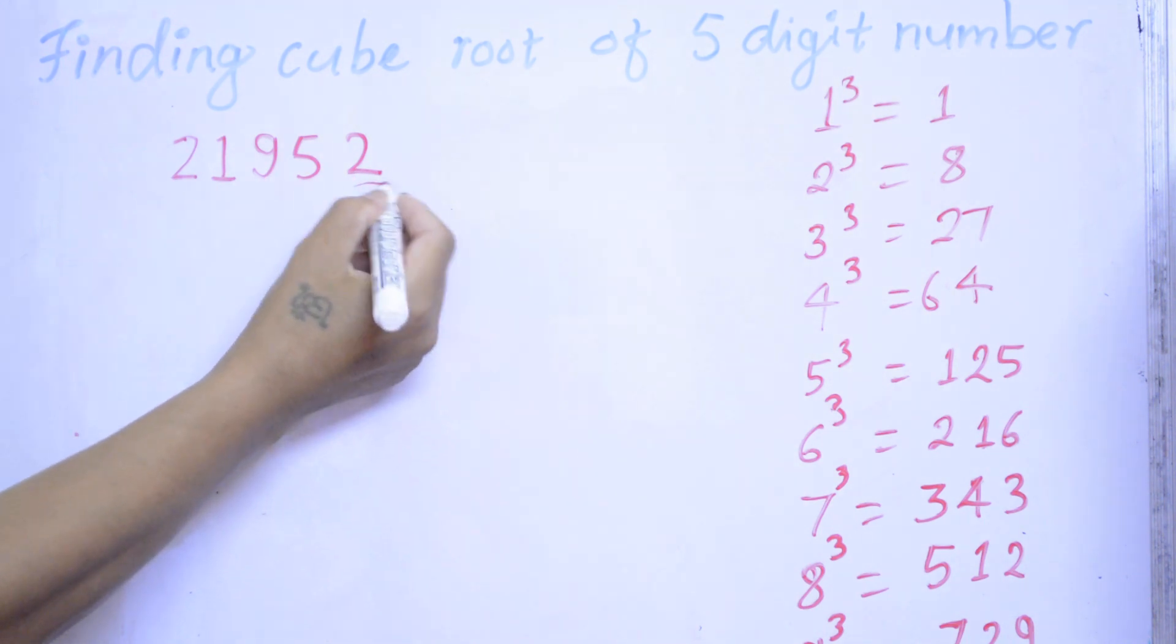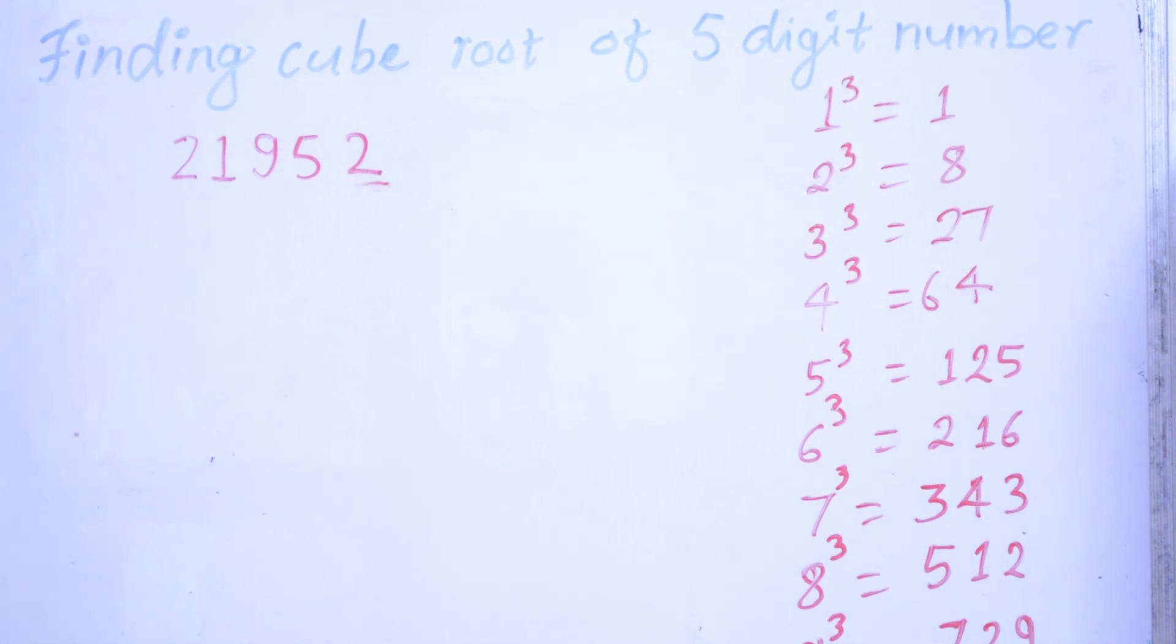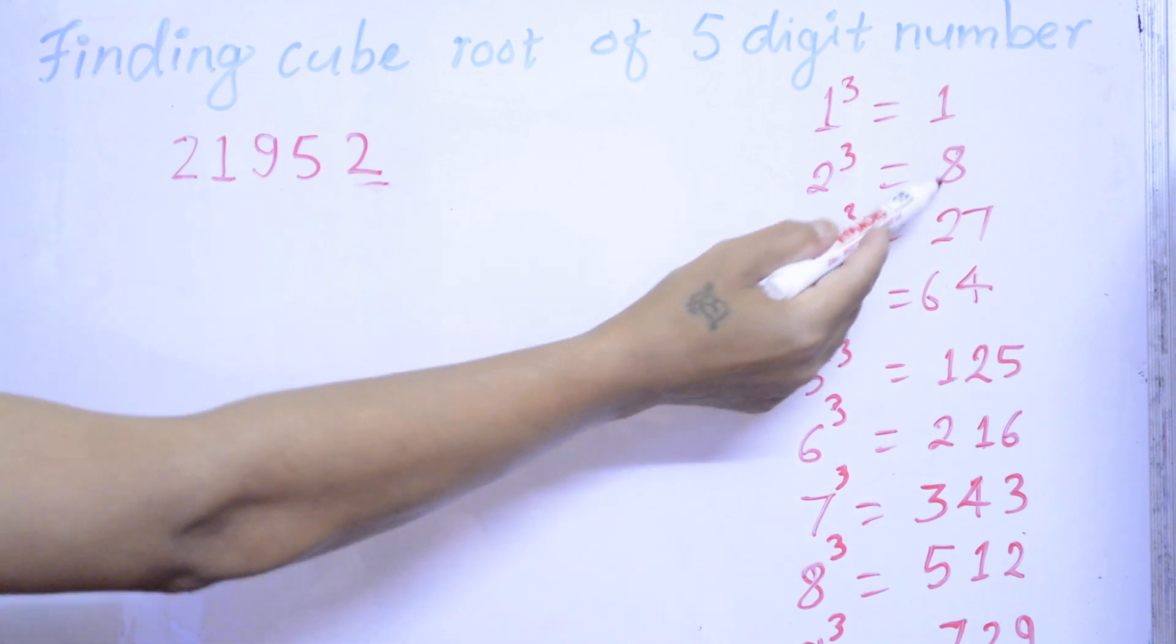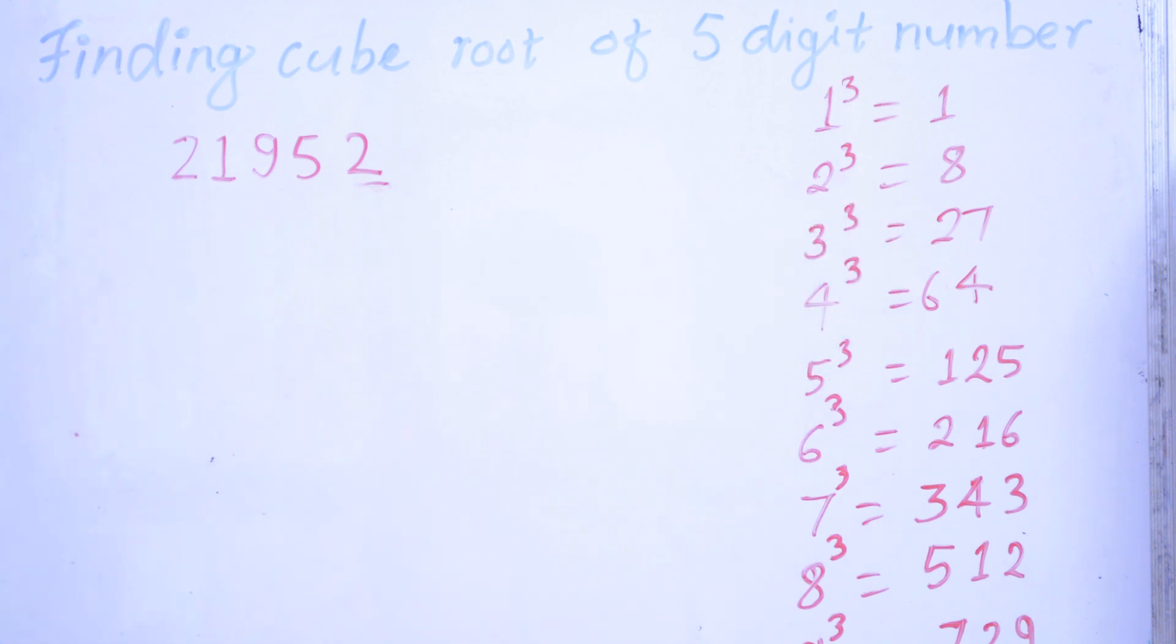2 is the last digit number. What is the cube root of 2? 8. So we write here 8.